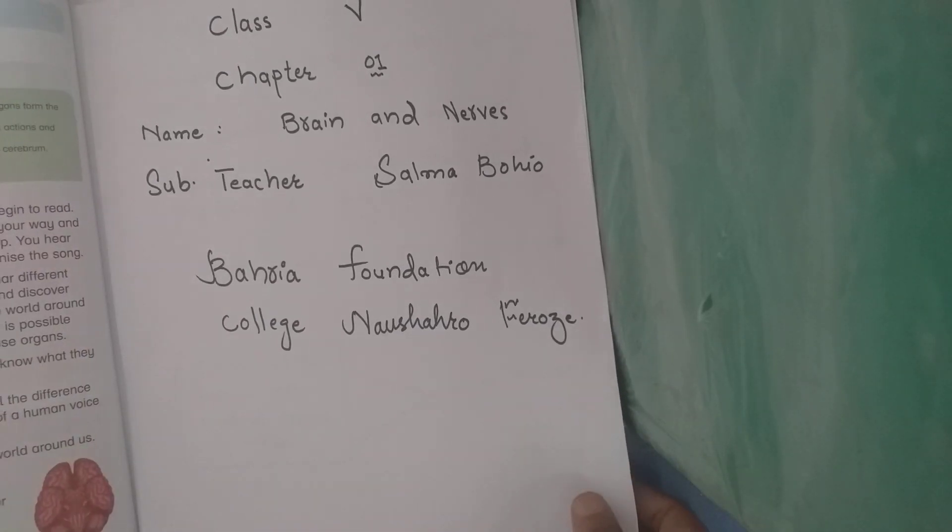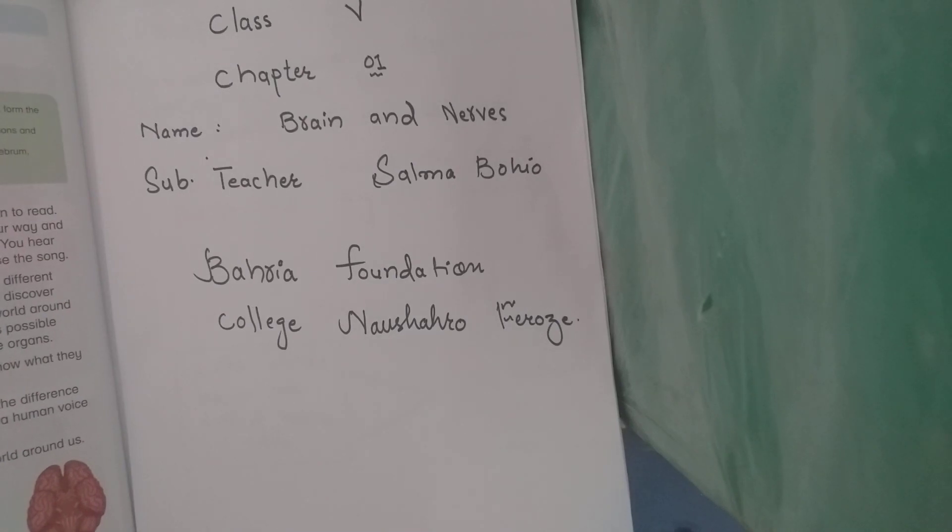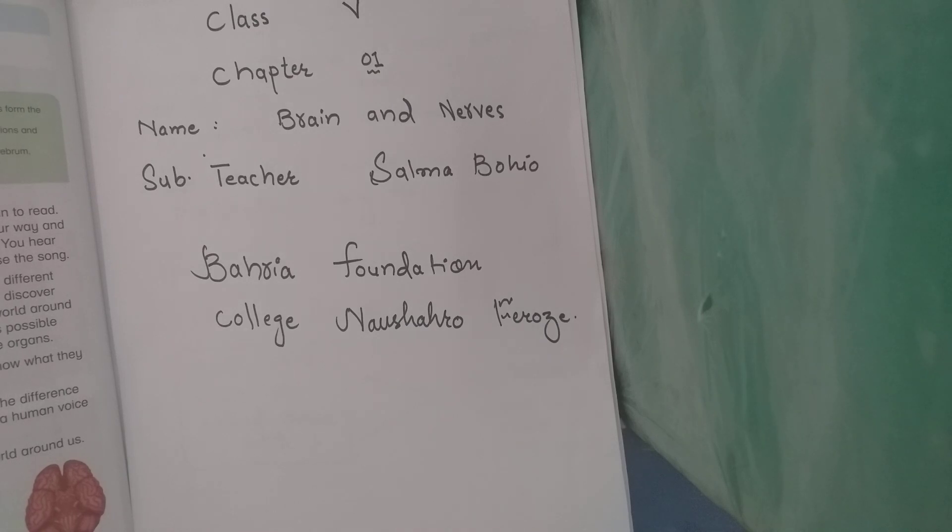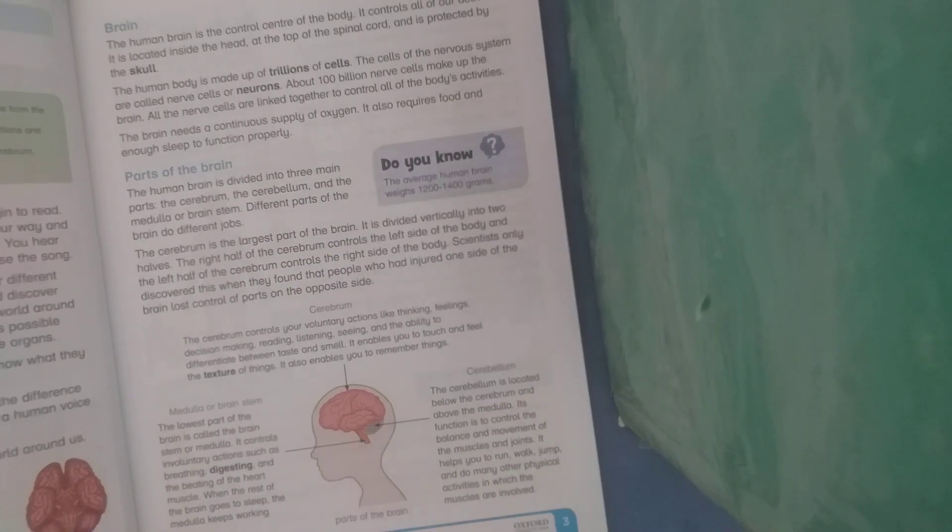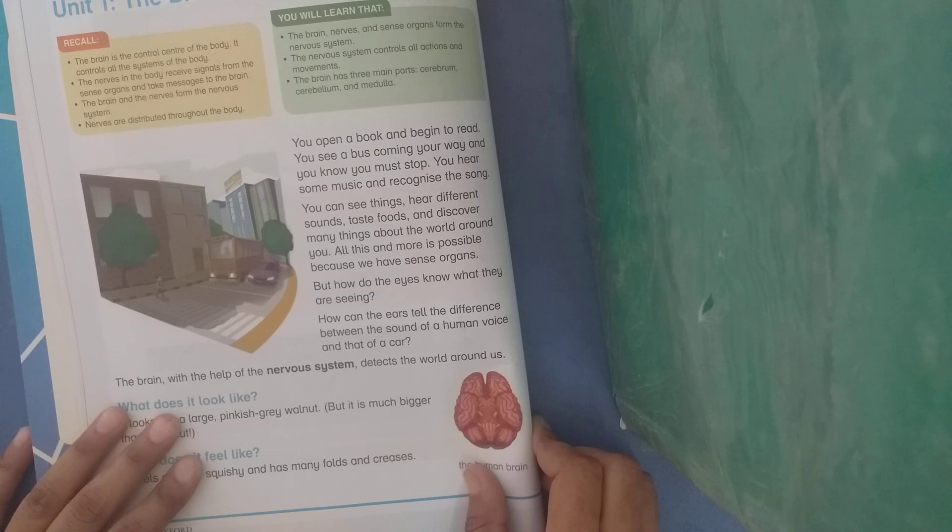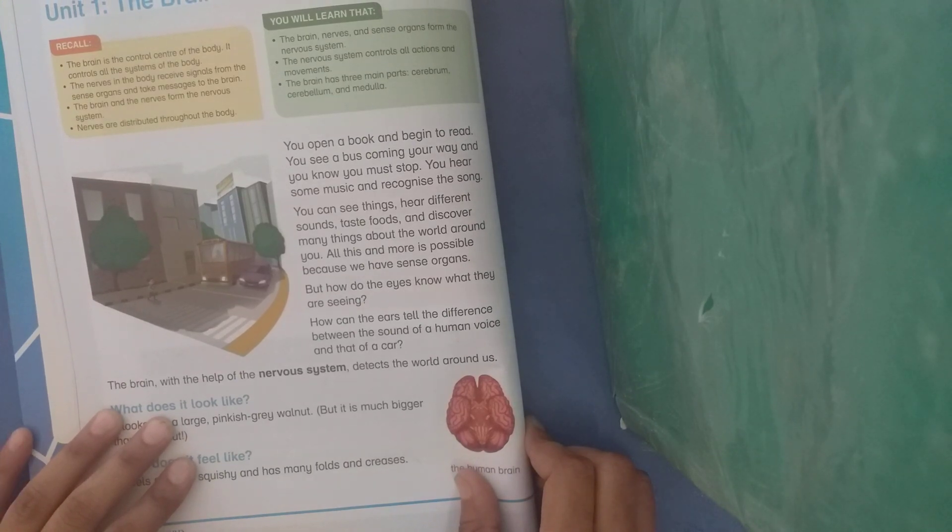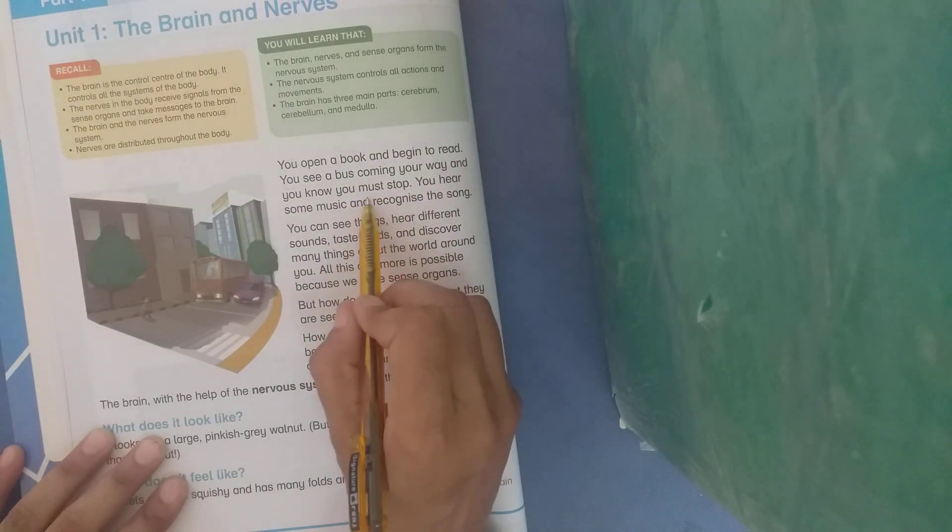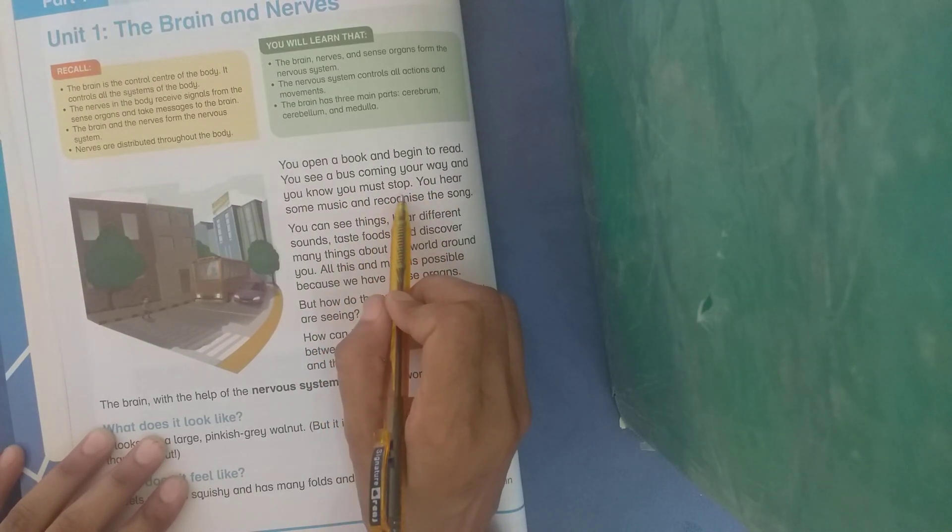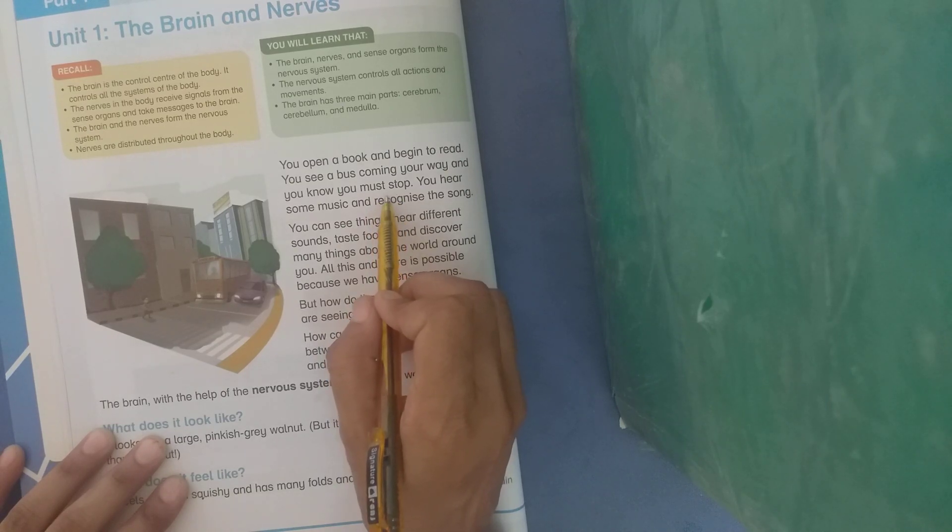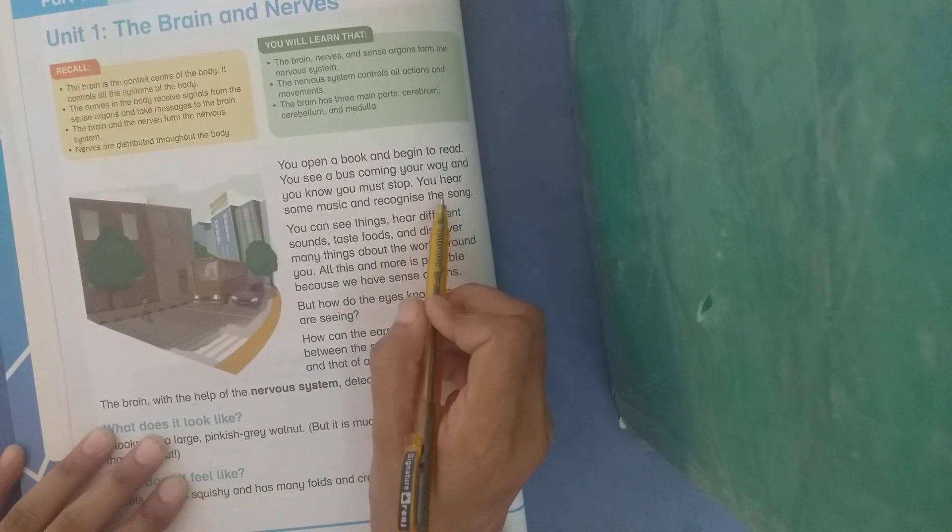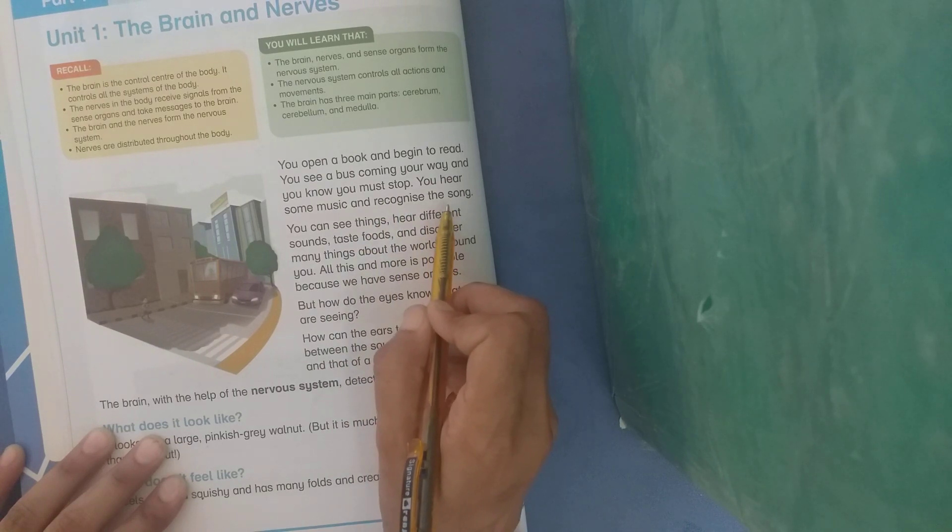The brain and nerves. You open a book and begin to read. You see a bus is coming on your road and you know you must stop. You have to stop. You hear some music and recognize a song.